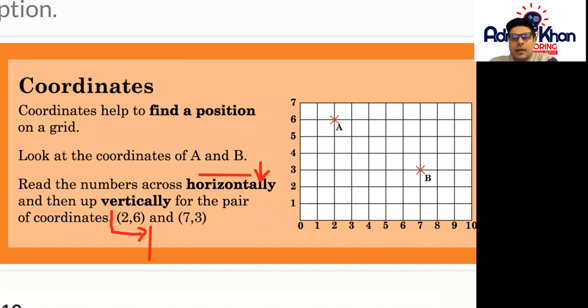Okay so first of all we always look at the horizontal line and then we look at the vertical line. So let's have a look at the coordinates that we have here so A and B.